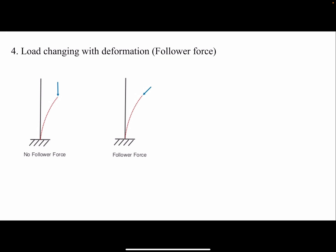The last type of non-linearity is follower force, when the load changes with deformation. In the non-follower force case, the magnitude and direction of the force do not change — an example would be fluid pressure on an object, which is always perpendicular to the surface regardless of deformation. With a follower force, the force direction follows the member; as the member changes, the force also changes. An example could be mechanisms with multiple members where the force on each member is exerted by another member — as the mechanism moves, the force changes direction as well.